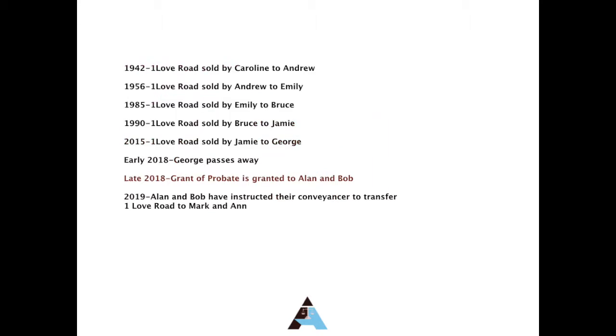In the case of the late George in our scenario, the legal title will have passed to the executors; therefore, the Grant of Probate will also have to be produced as part of the chain of ownership.